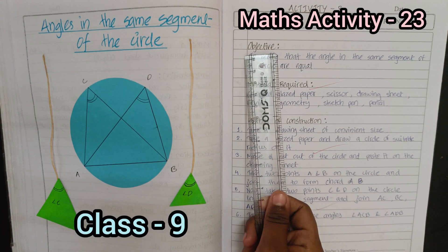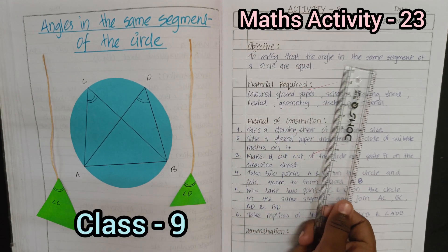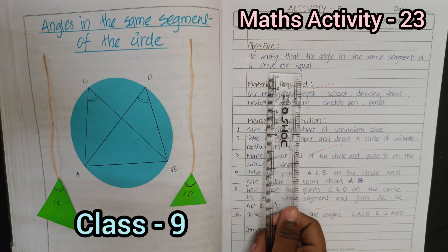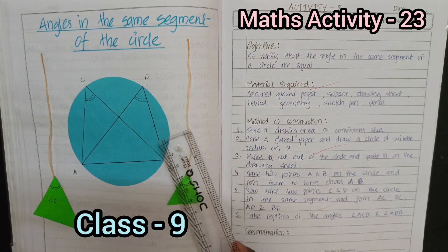Activity 23. Objective: to verify that the angle in the same segment of a circle are equal. We will draw a circle.